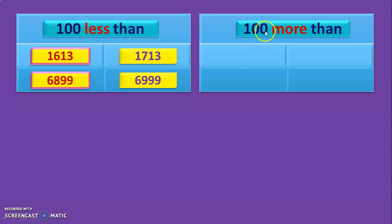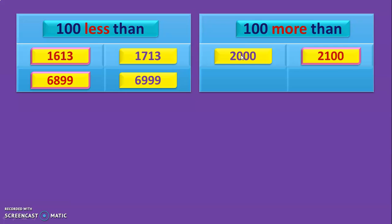Next, 100 more than. We look at the 100s place and add 1 to that digit because the keyword is 'more'. Once you realize this concept the mental math will be very easy — just look out for the keyword and whether it is 1, 10, 100, or 1000, then subtract or add accordingly. For 100 more than 2,000: the 100s digit is 0, add 1 — answer is 2,100. For 9,025: the 100s digit is 0, add 1 — 100 more than 9,025 is 9,125.